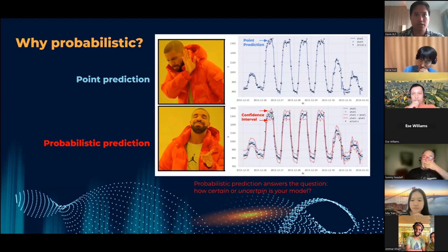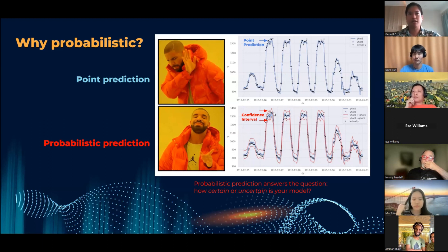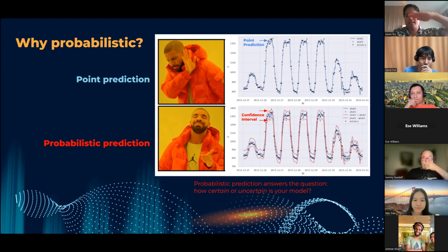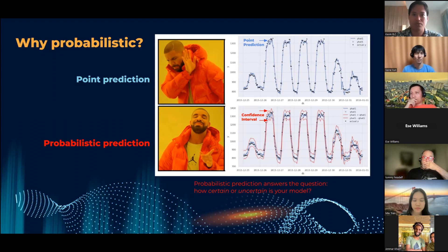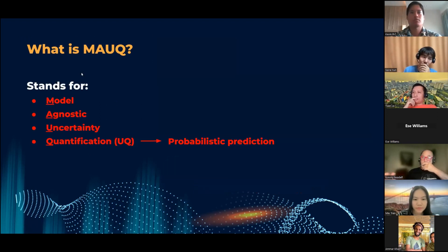This is based on a certain level of confidence — for example, a 90% confidence interval. If your confidence interval is narrow, that means your model is very certain. If your confidence interval is very wide, that means your model is more uncertain, making it unreliable and potentially something that should be discarded. But that is something you can only realize if you use a probabilistic prediction rather than a point prediction.